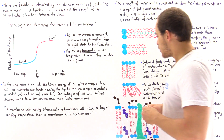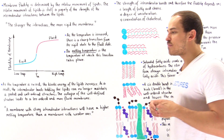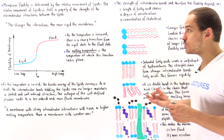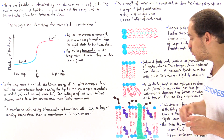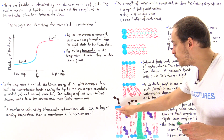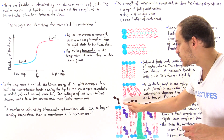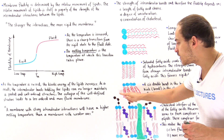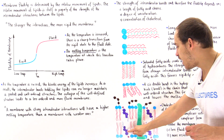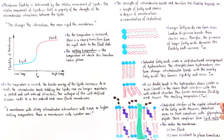Cholesterol molecules are steroid molecules containing four fused rings, as shown in the diagram. Here we can see phospholipid molecules, glycophospholipids that contain sugar components, cholesterol molecules, and a transmembrane integral protein.